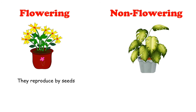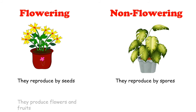Flowering plants reproduce by seeds. Non-flowering plants don't reproduce by seeds — they reproduce by spores.